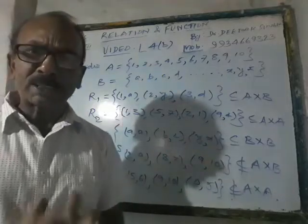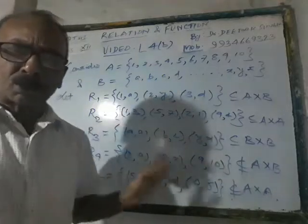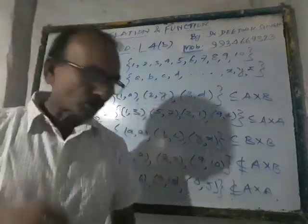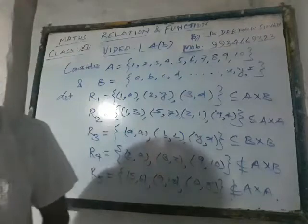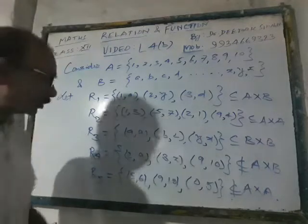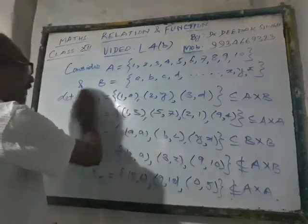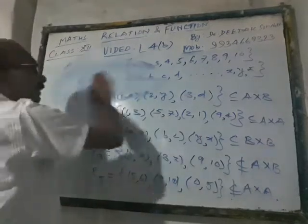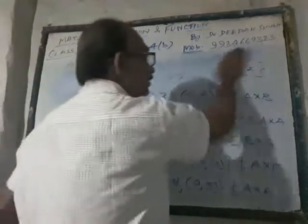So this is a very simple way to differentiate and recognize whether a given set is a relation from A to B or A to A or not, without writing out A cross B. After this, I am going to deal with the number of relations.